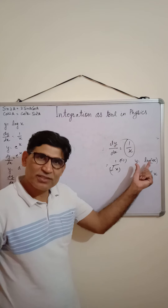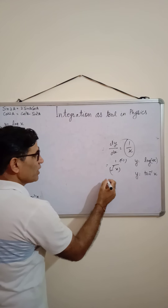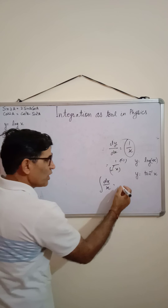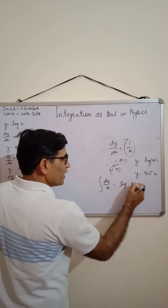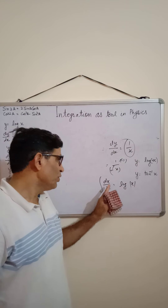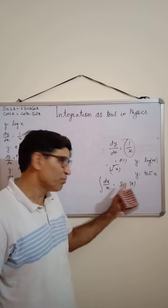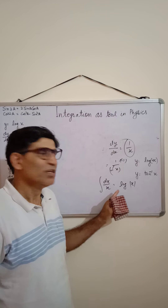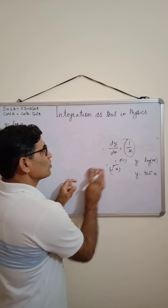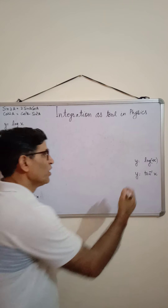So when we integrate 1/x (i.e., dx/x), the answer will be log|x| — with the modulus sign. This is because whether x is negative or positive, the differentiation of log|x| gives 1/x. So that is why we use the modulus of x here. We will discuss this further when we get to integration.